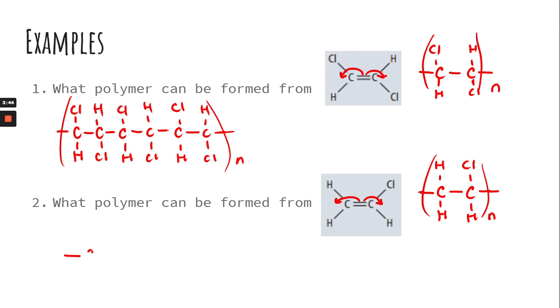So if we want to repeat it a couple times here, just to see what it would look like. We have that first carbon with two hydrogens on it, the second carbon with a chlorine, and then we repeat. Two hydrogens, chlorine, hydrogen, repeat. So here you can see that that monomer is repeated for the polymer three times.